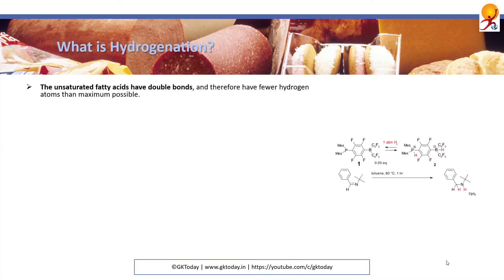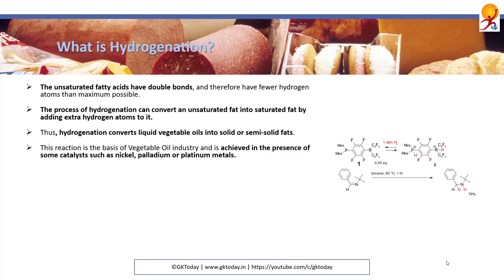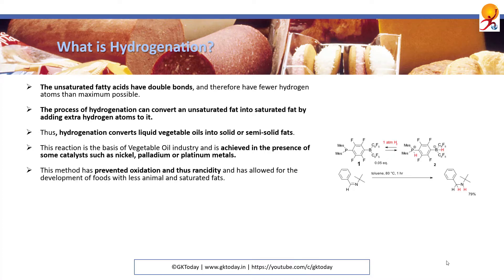What is hydrogenation? Unsaturated fatty acids have double bonds and therefore have fewer hydrogen atoms than the maximum number possible. The process of hydrogenation can convert an unsaturated fat into saturated fat by adding those extra hydrogen atoms, thus converting liquid vegetable oils into solid or semi-solid fats. In industries this is achieved by the presence of some catalysts such as nickel, palladium or platinum metals. This method has prevented oxidation and thus rancidity, and has allowed for the development of foods with less animal and saturated fats.